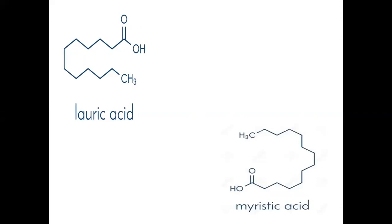The next structure is myristic acid — a saturated fatty acid with 14 carbon atoms in its long chain. It is mainly found naturally in palm oil and butter fat, and sometimes in coconut oil. The formula of myristic acid is C14H28O2, and its other name is tetradecanoic acid.